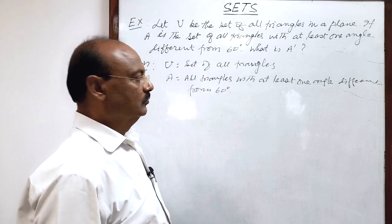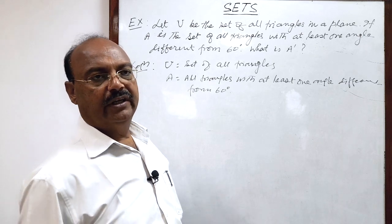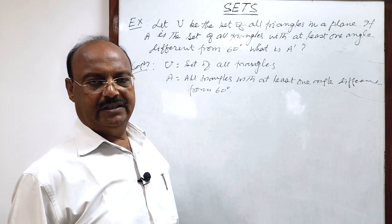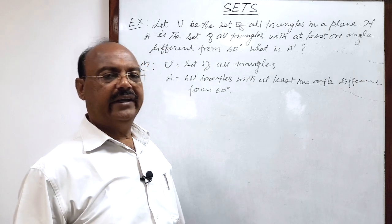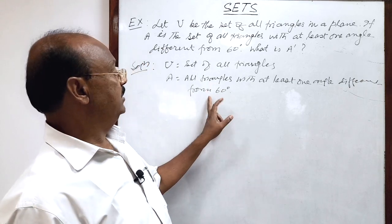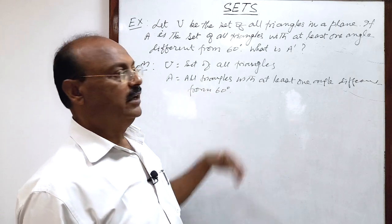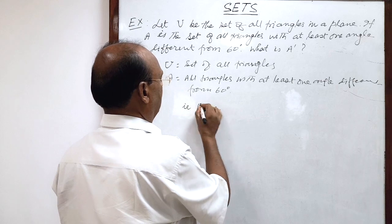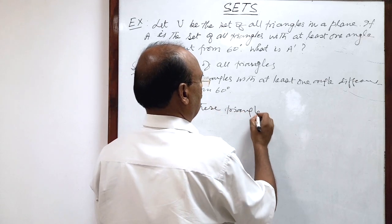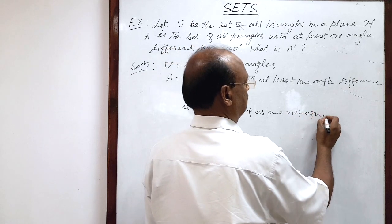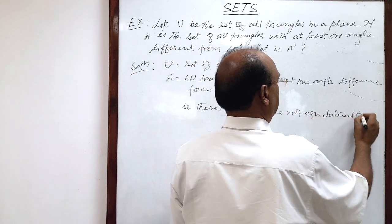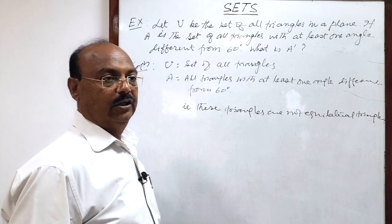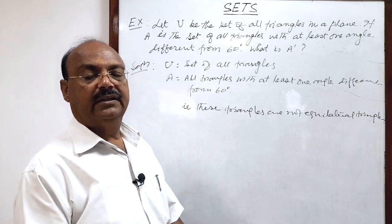What does it mean? If one angle is different from 60 degrees, it means these triangles are not equilateral triangles. In equilateral triangles, all angles are 60 degrees. But if at least one angle is not 60 degrees, this triangle cannot be an equilateral triangle. So set A consists of all triangles other than equilateral triangles.